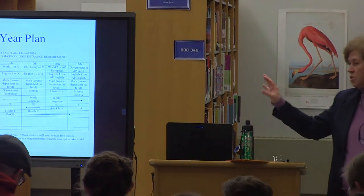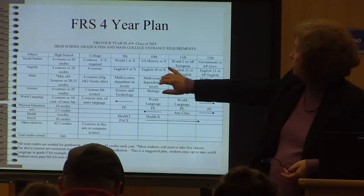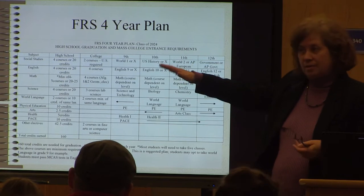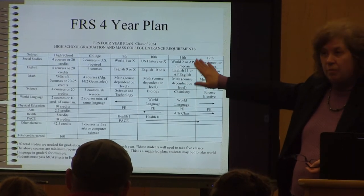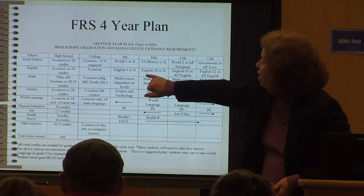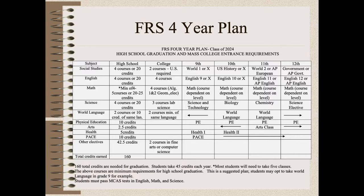One of the handouts you have is a four-year plan with information about graduation requirements for each year. Looking at social studies: freshman year, all students take World History I or World History I Honors; 10th grade, US History; 11th grade, World History II or AP European History, which satisfies that requirement; senior year, Government or AP Government. All departments are outlined showing where students need to be by graduation, and you'll find that information in a different format on the Scheduling Information page.